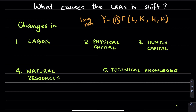What could cause a change in labor? If there is immigration from abroad, that would reduce the natural rate of unemployment and shift the long-run aggregate supply curve to the right, because you have more immigrants producing more. Similarly, a decrease in the natural rate of unemployment coming from a reduction in the minimum wage would also shift the long-run aggregate supply curve to the right.